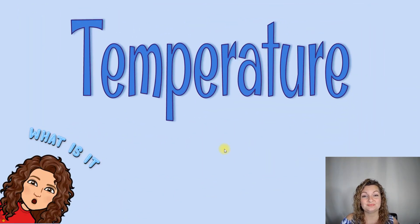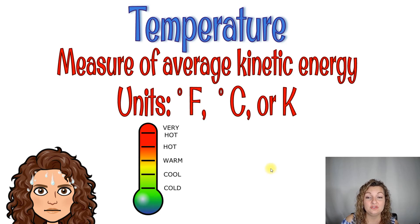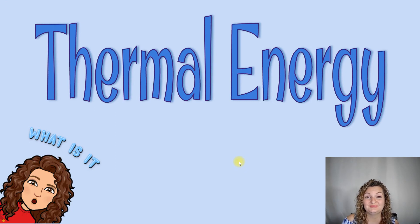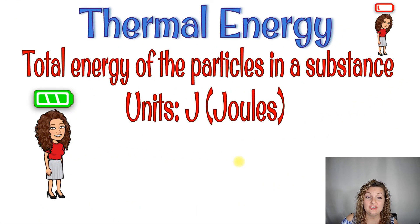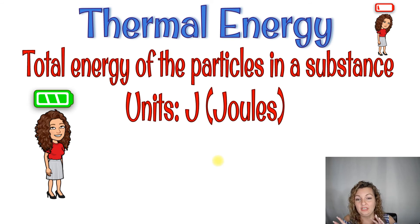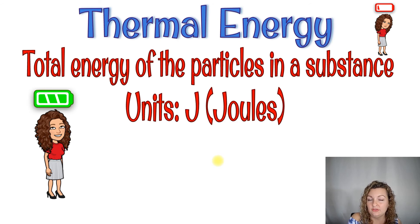Temperature is a measure of average kinetic energy. You can measure this in Fahrenheit, Celsius, or Kelvin. Thermal energy is the total energy of the particles in a substance, and our units are joules with a capital J. Remember, thermal energy can be cold or hot — it's about how many particles there are versus how fast they're going. Even something cold like ice still has thermal energy.